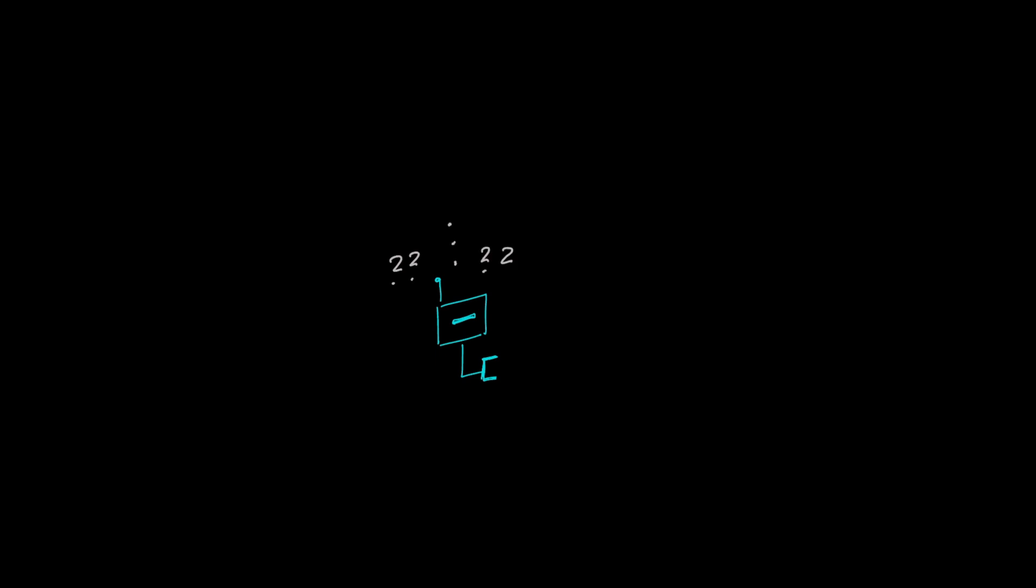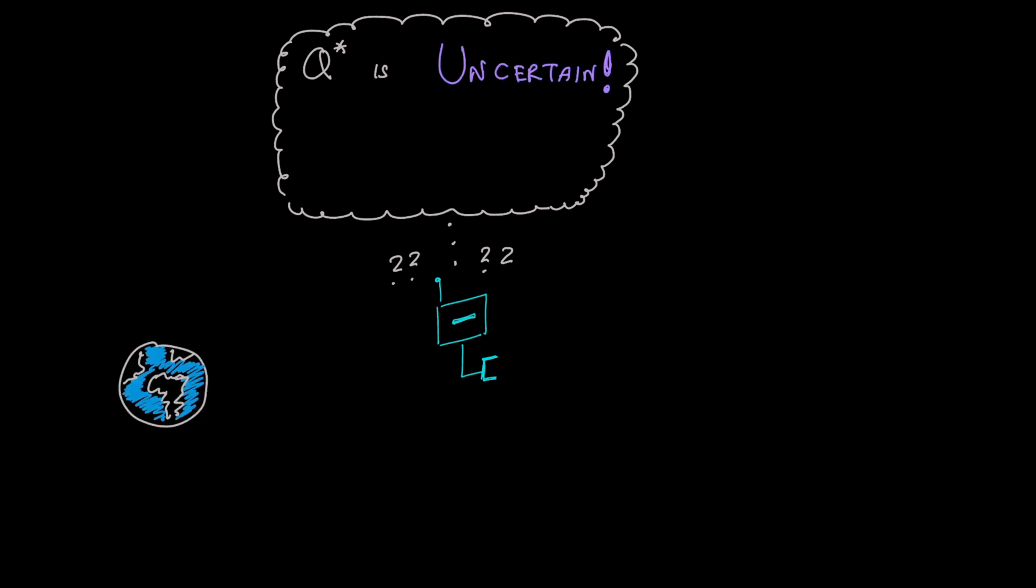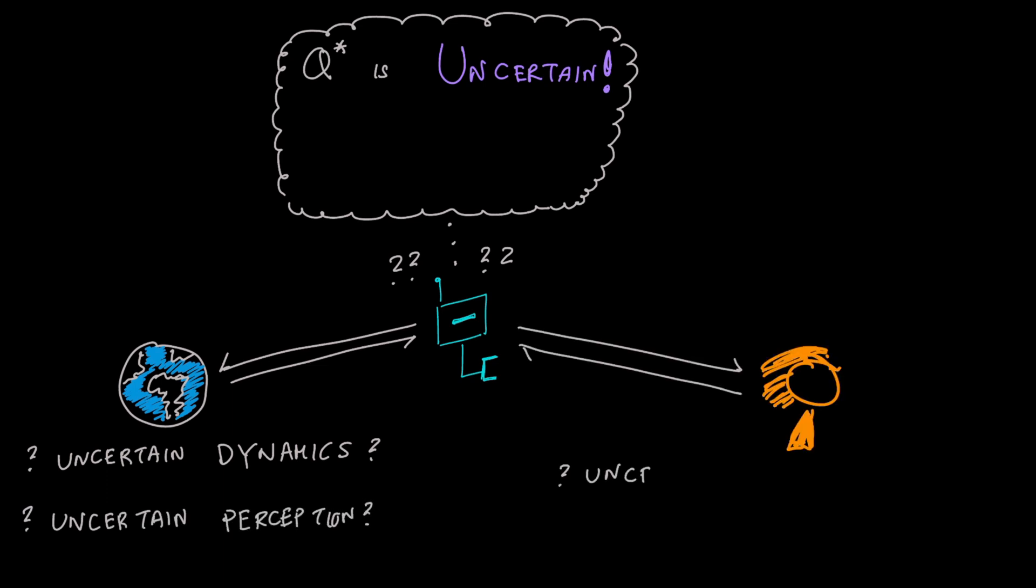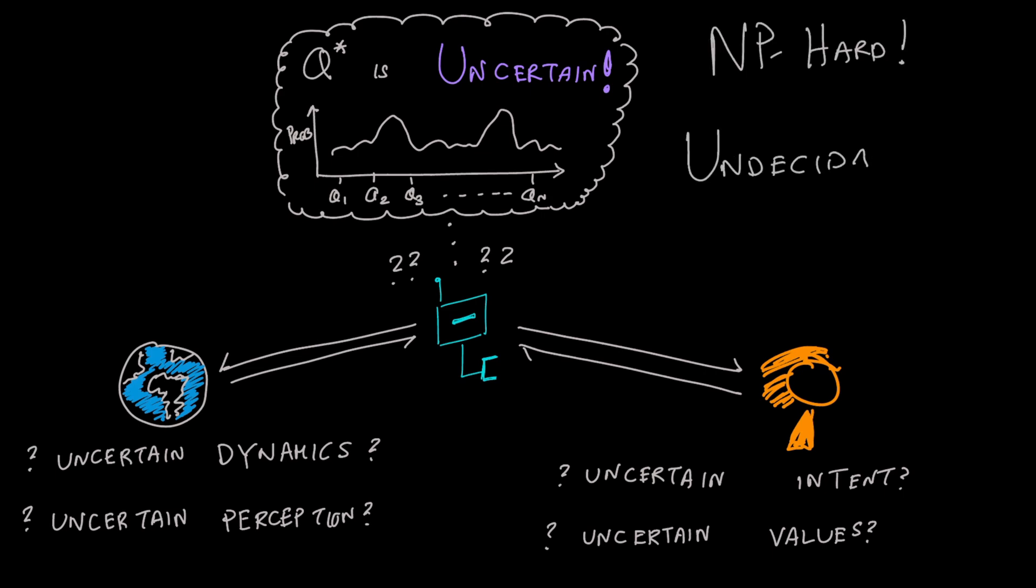Robot learning is fundamentally challenging because of the degree of uncertainty in the value function. This uncertainty comes from both the world because of uncertain dynamics and perception, as well as from humans because of their uncertain intent and values. Even if we were to represent this uncertainty somehow, planning under this uncertainty is theoretically NP-hard in some cases and undecidable in others.